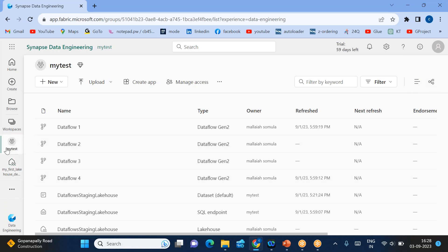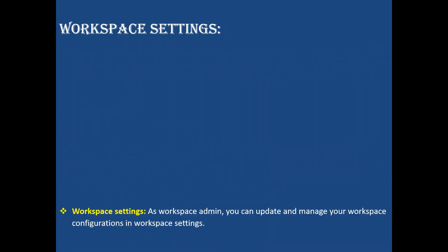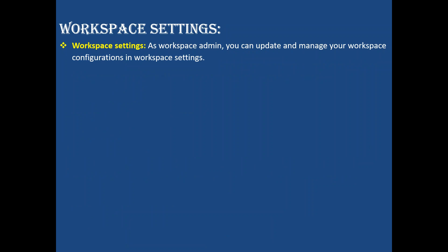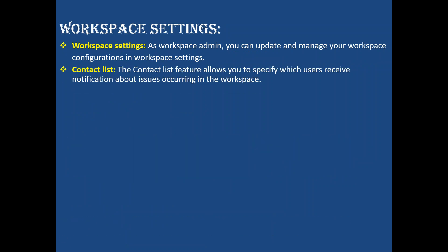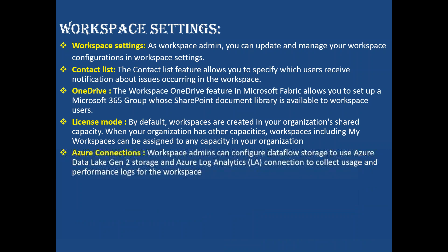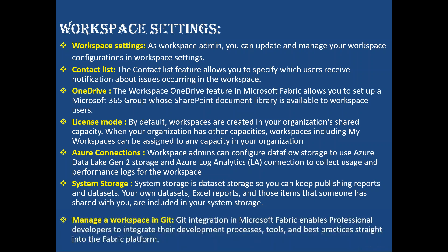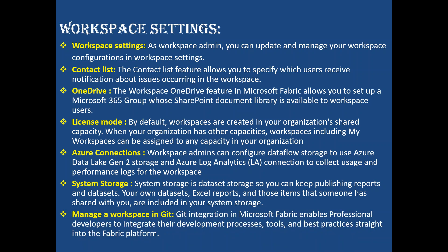Let's go through some of the other things in the presentation. Workspace settings: workspace admins can control workspace settings. Contact list is for notifying users about changes happening in the workspace. OneDrive is for sharing all your documents. License mode is the capacity you are choosing. Azure connection is for collecting usage and performance logs. System storage is for keeping published reports and shared datasets. You can also integrate the workspace with Git, which is a version control tool.